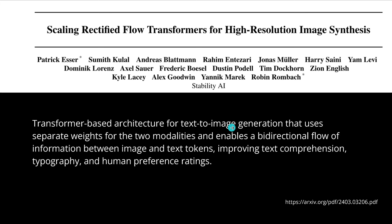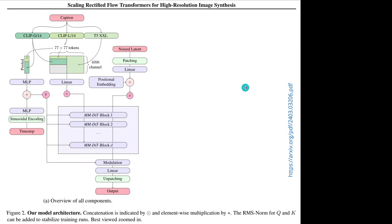Put mildly, we have a transformer-based architecture for text-to-image generation that uses separate weight structure tensors for the two modalities of text and image. We have now a bridge — an interconnect — which enables a bi-directional flow of information between the image tokens and the text tokens, improving human preference ratings, text comprehension, and the performance of the system.